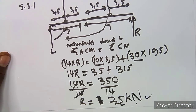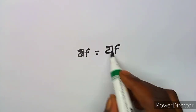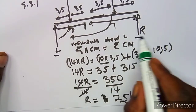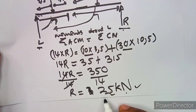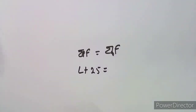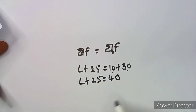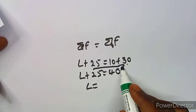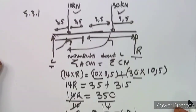Now finding L using the equilibrium of vertical forces: sum of upward forces equals sum of downward forces. L + R = 10 + 30. So L + 25 = 40, therefore L = 40 − 25 = 15 kN.